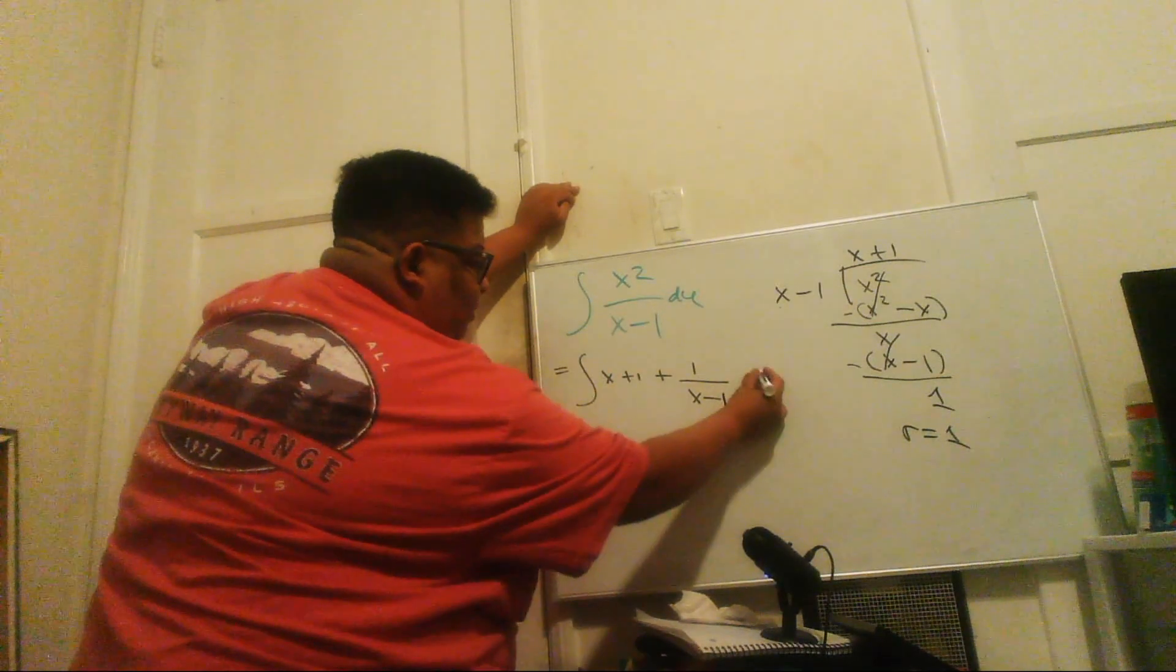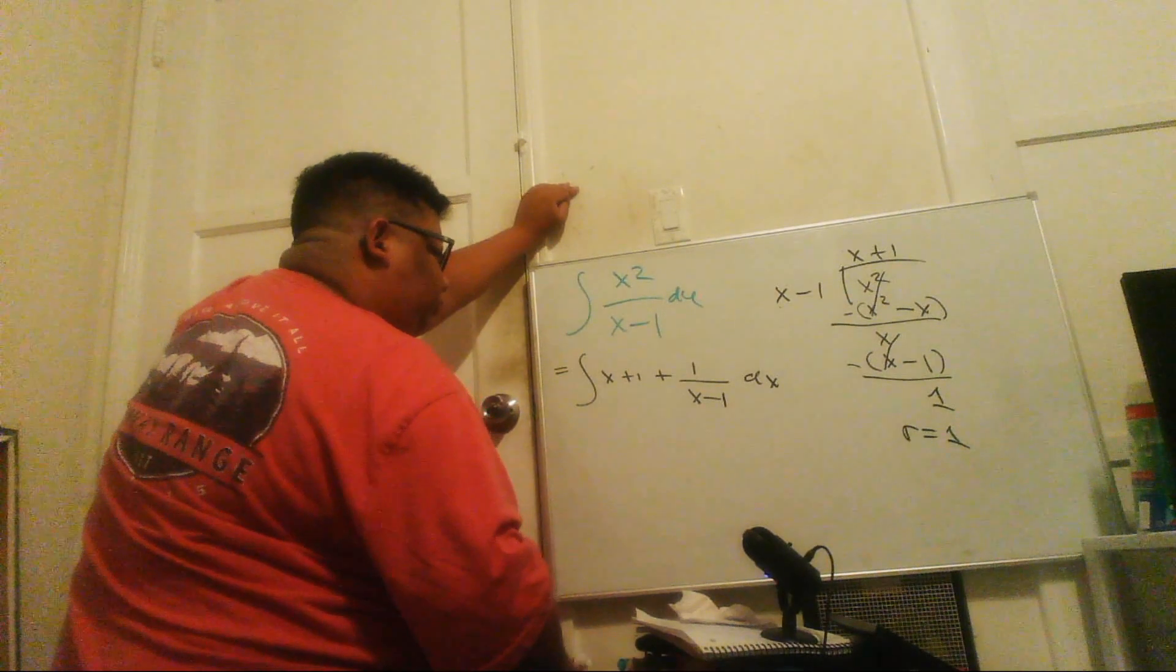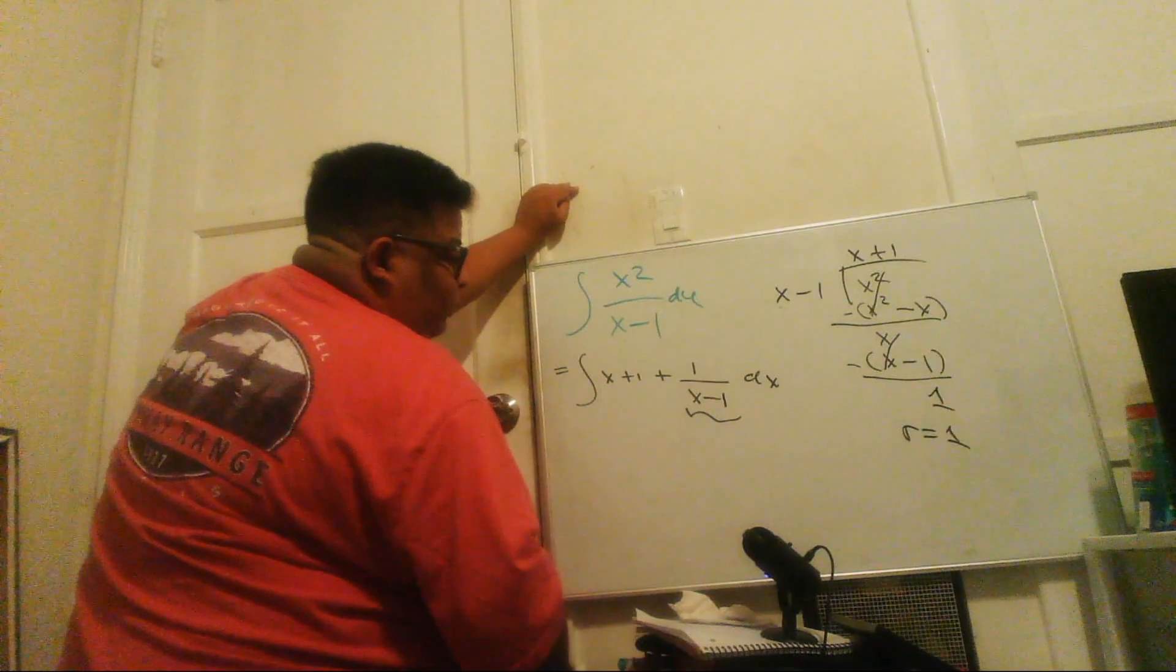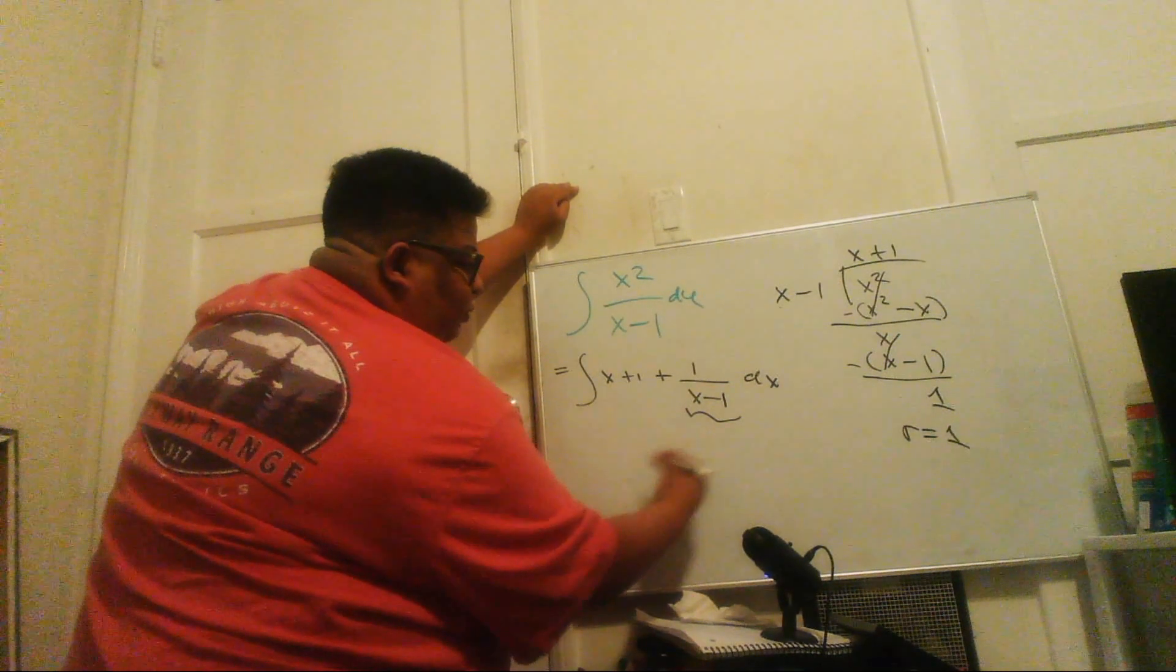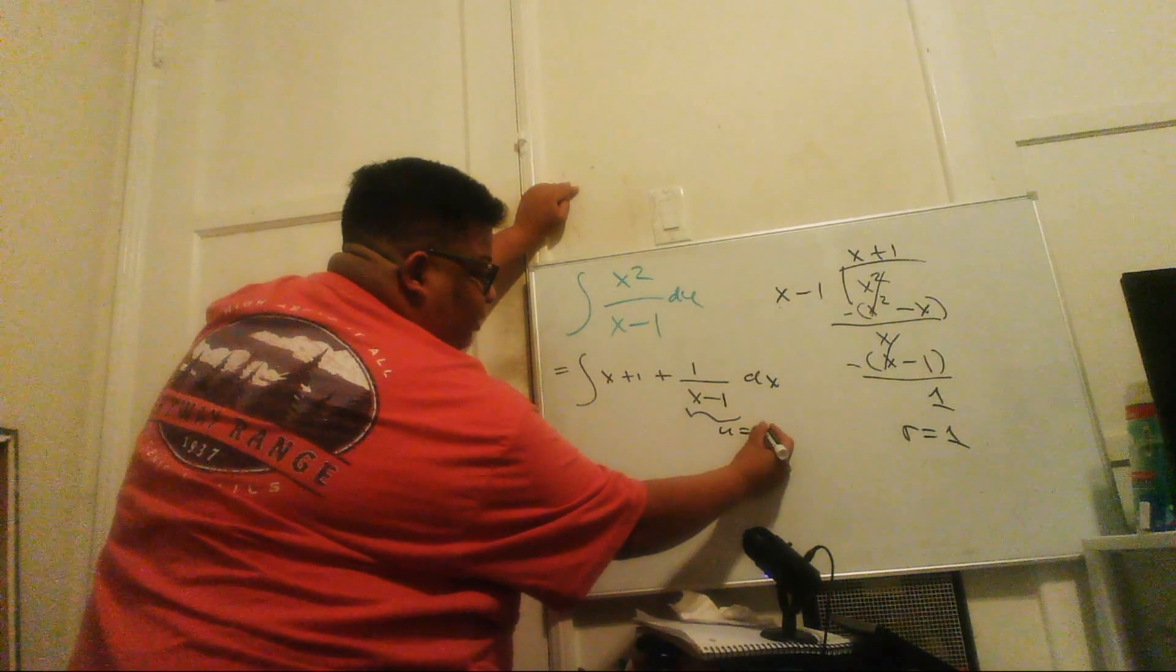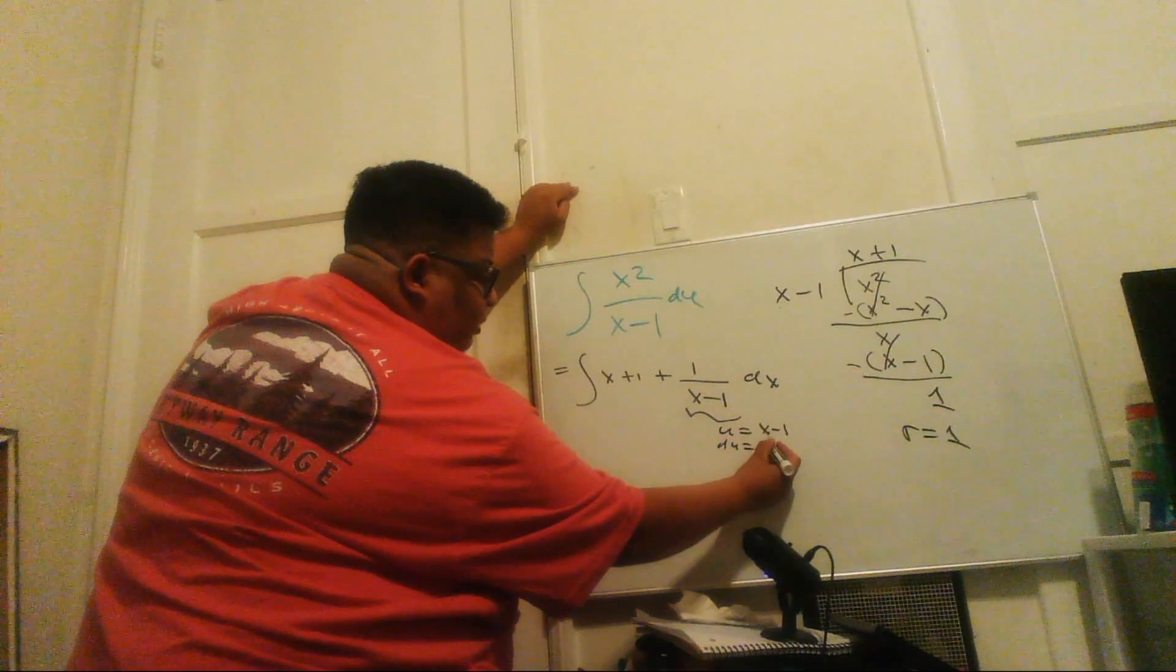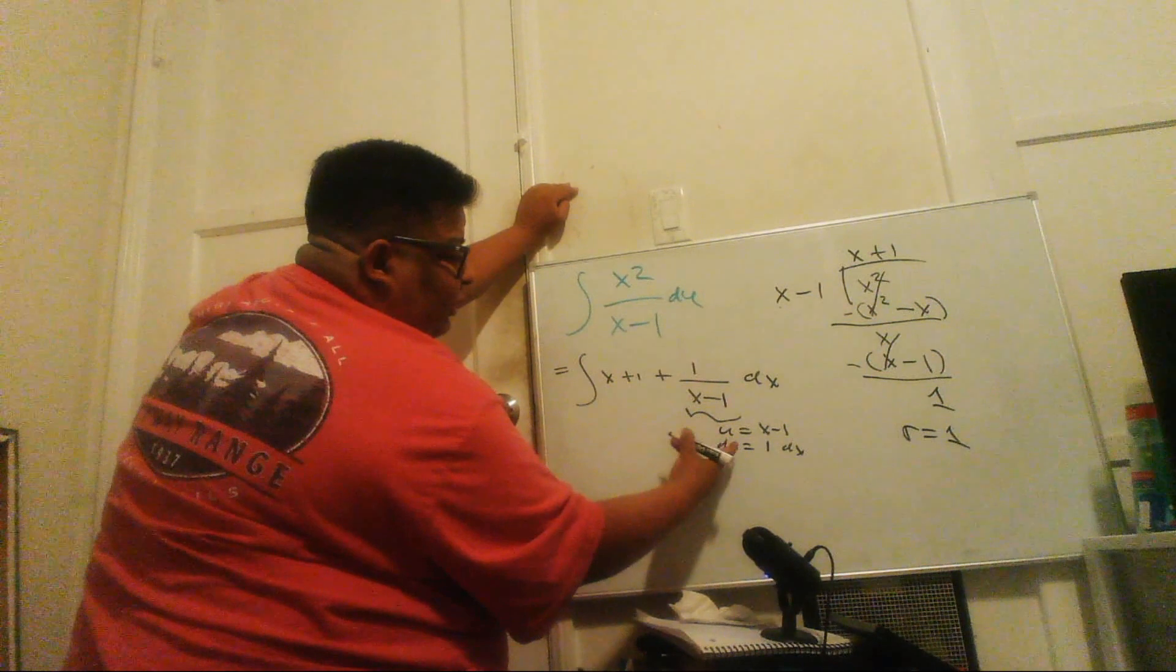So then this becomes dx. Notice this part of the integral can be done with u-substitution. We'll let u equals x minus 1, so du equals 1 dx, and then you have 1 over u, and that becomes ln of absolute value of u.